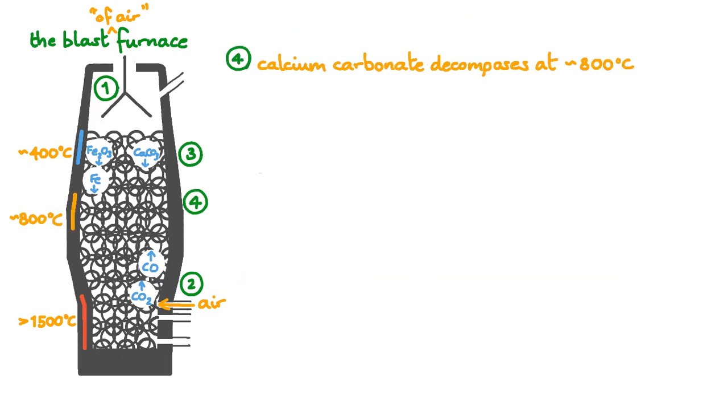At about 800 degrees, the calcium carbonate introduced by the limestone decomposes fast enough to produce the calcium oxide we need. The decomposition of calcium carbonate into calcium oxide and carbon dioxide is endothermic, so this process absorbs some of the heat generated by burning the coke. The extra carbon dioxide produced can also react with carbon to produce more carbon monoxide.